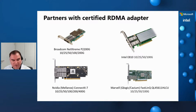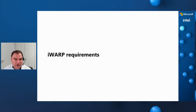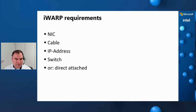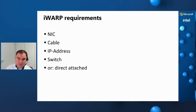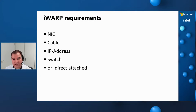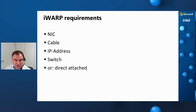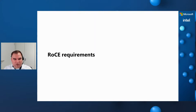What are the requirements for iWarp? You need an iWarp-capable network interface card — for example, the Intel E810. You need the cabling, an IP address, and either a switch or a direct-attached configuration. It's very straightforward — it's like configuring a typical network environment.